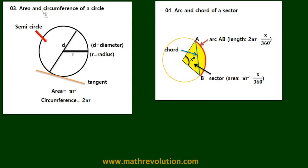In this video we're going to look at the area and circumference of a circle. So half a circle is a semicircle, D is the diameter, and R is the radius.